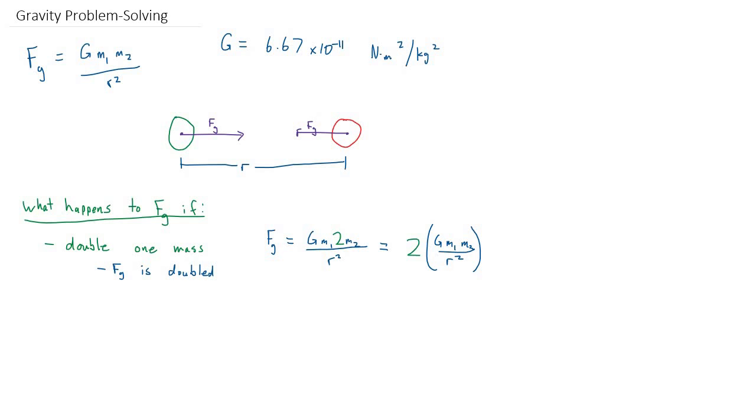Notice that's only from doubling one mass. If we would double both masses, I would have two twos in my equation, and two times two would be four. I would quadruple my force of gravity if I doubled both masses.